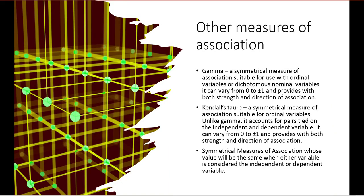Two other measures of association you may encounter are gamma and Kendall's tau b. Gamma is a symmetrical measure suitable for ordinal variables or dichotomous nominal variables; it ranges from 0 to plus or minus 1 and provides both strength and direction. Kendall's tau b is also a symmetrical measure for ordinal variables only; unlike gamma, it accounts for pairs tied on both the independent and dependent variable, also ranging from 0 to plus or minus 1 and providing both strength and direction. Symmetrical measures have the same value regardless of which variable is treated as independent or dependent. That is all for this lecture.